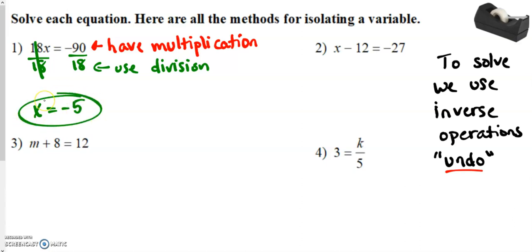And that value is our solution. Okay. It is the value that if we substitute that back in, it makes this statement true. 18 times negative 5 does, in fact, equal negative 90. That is true. Okay.